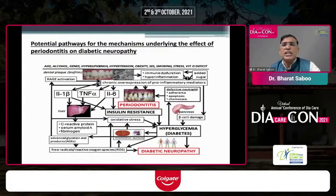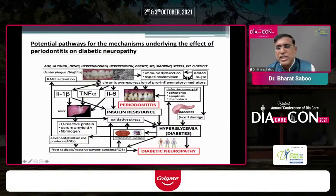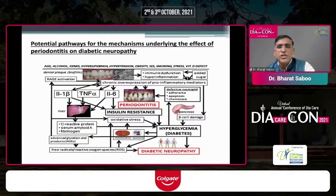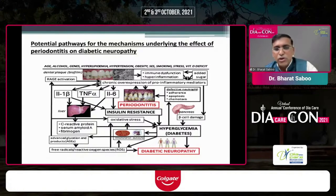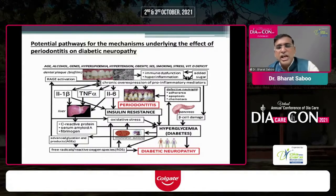These are the potential pathways underlying the effect of periodontitis on diabetic outcomes. Risk factors such as age, alcohol, genes, hyperlipidemia, obesity, smoking, stress, and vitamin D deficiency form the soil. These lead to immune dysfunction or hyper-inflammation. Added sugar causes chronic overexpression of pro-inflammatory mediators, leading to beta cell damage in the pancreas, which causes hyperglycemia. This hyperglycemia activates mitochondria and leukocytes, generates free radicals, and leads to neuropathy. In this way, oral health is affecting our pancreas, liver, and overall metabolic health.